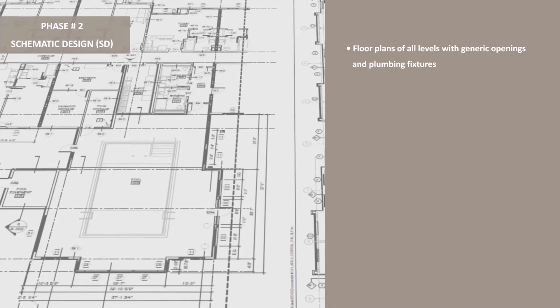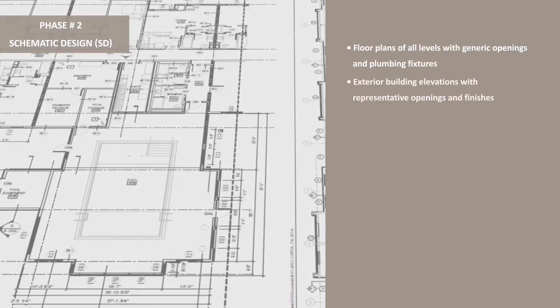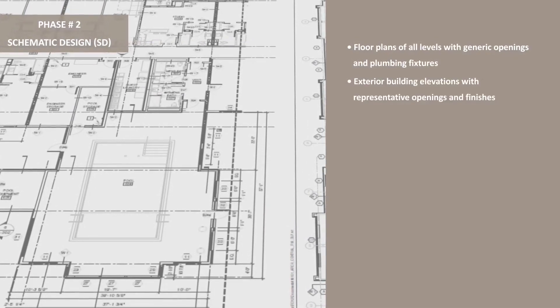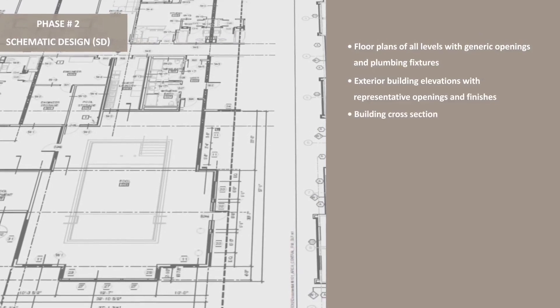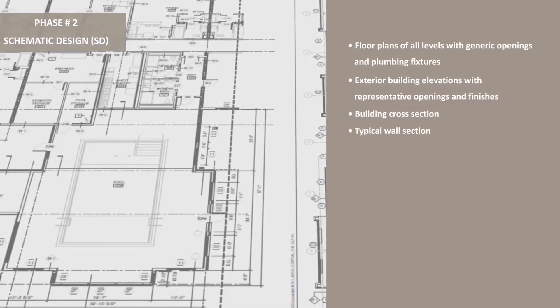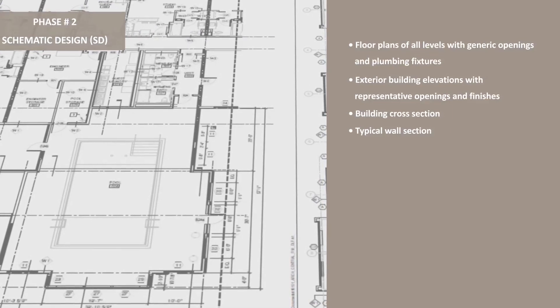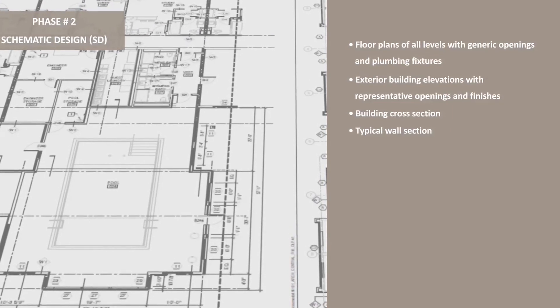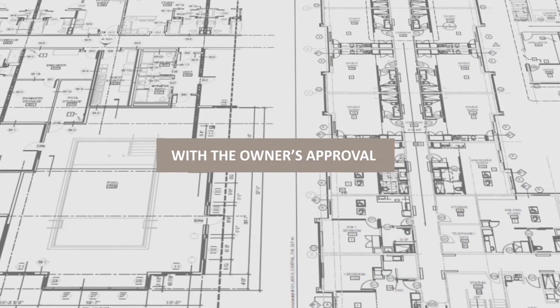Phase 2: Schematic Design. In this phase, we do a series of rough sketches and drawings that illustrate the basic concepts of the design. Also, initial research of local compliance and regulations are completed at this time. We move to the next phase with the owner's approval.